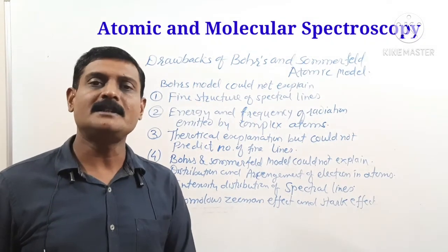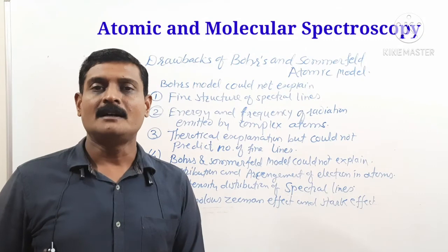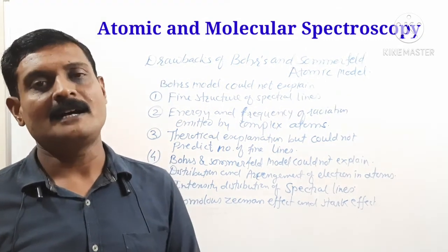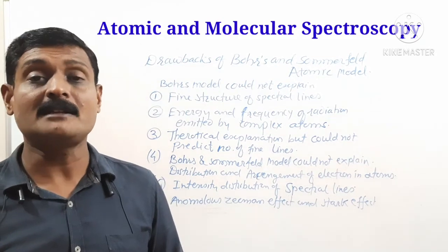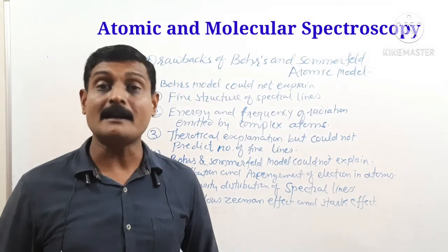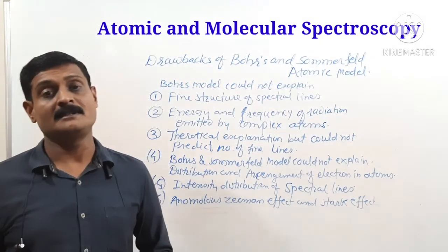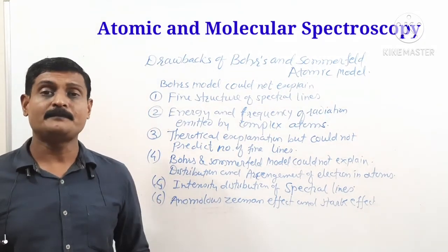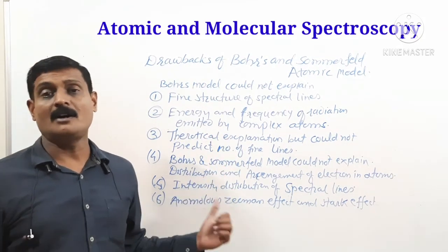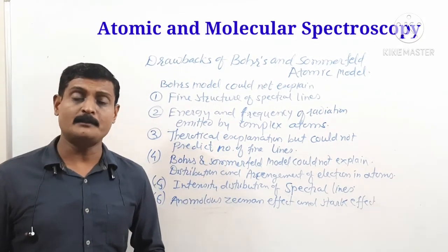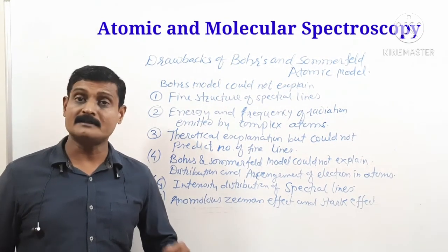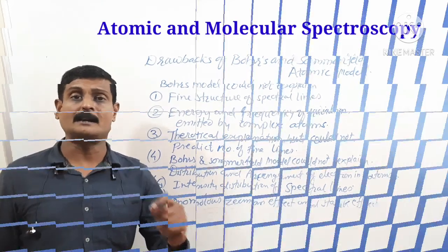To overcome these drawbacks, we discuss the next atomic model: the vector atom model. Two scientists, Uhlenbeck and Goudsmit, suggested this new model, which overcomes the drawbacks of Bohr's and Sommerfield models. This model is called the vector atom model.